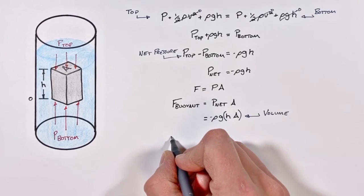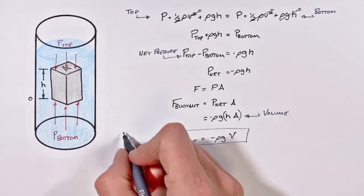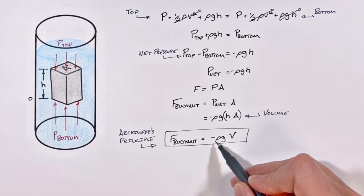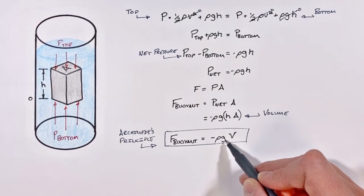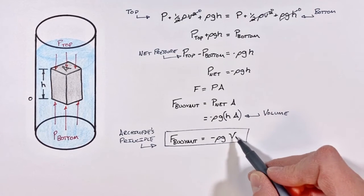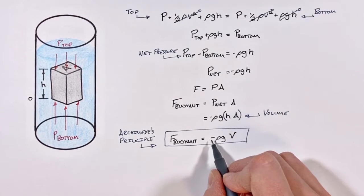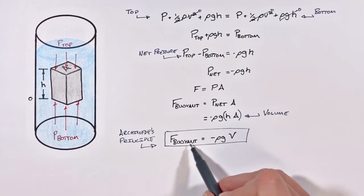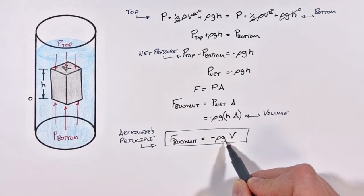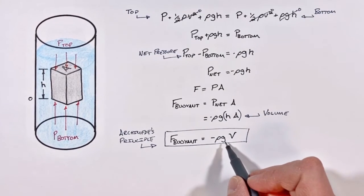So the buoyant force is given by ρ, the density of a fluid, multiplied by the acceleration due to gravity, multiplied by the volume of an object. Now this negative is significant because it means the buoyant force is in the opposite direction of the acceleration due to gravity. And this equation for the buoyant force is what we call Archimedes' principle.